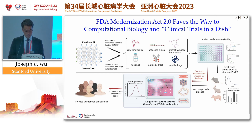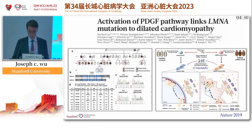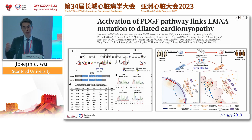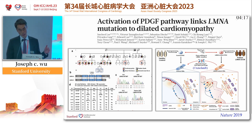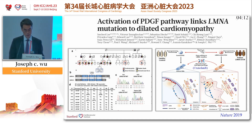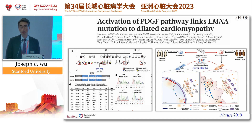I just want to show you one example of how we've been able to do this clinical trial in a dish. This is a large family that we recruited about six years ago — a Chinese family in the Bay Area and across the U.S. Nine of them died from sudden cardiac death, and it turns out they have a lamin frameshift mutation. Lamin is involved in the nuclear membrane.